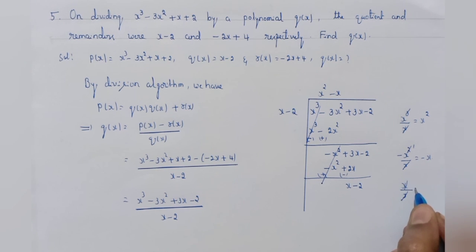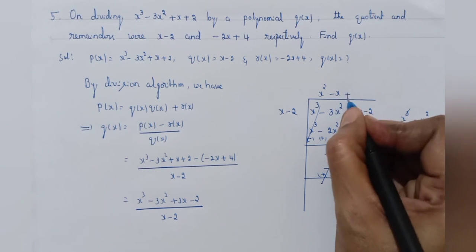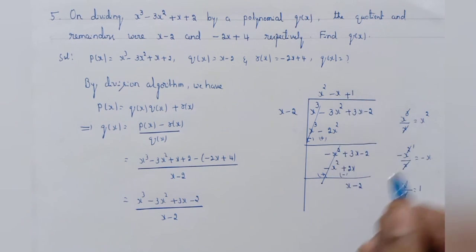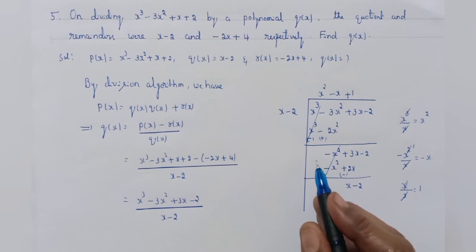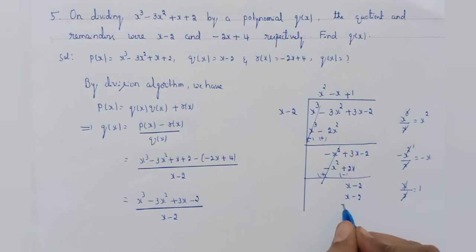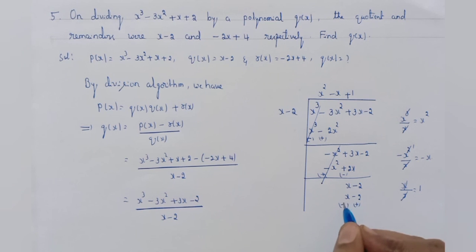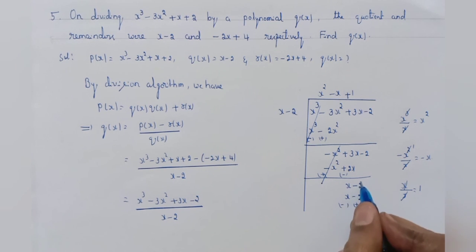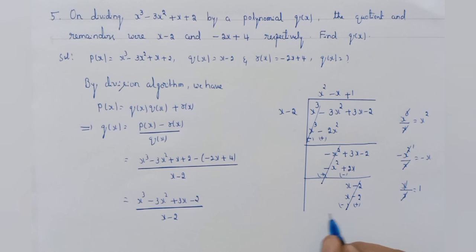Now divide the first term of the dividend x by the first term of the divisor x — x gets cancelled, you got 1. Write 1 in the quotient. Multiply x minus 2 by 1 — you get x minus 2. Change the sign: x minus x cancelled, minus 2 and plus 2 get cancelled.